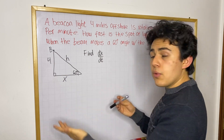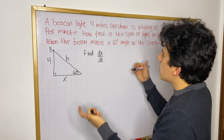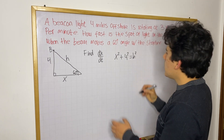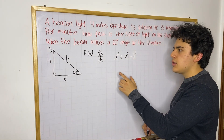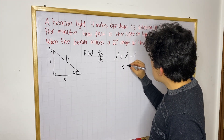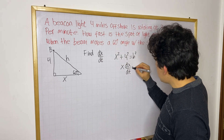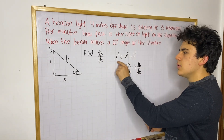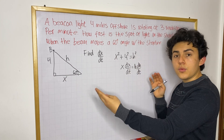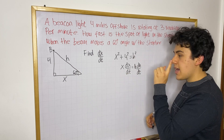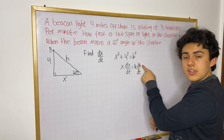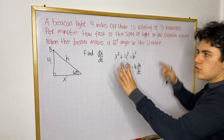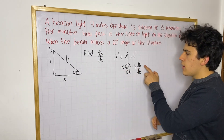So now we need to find dx/dt, because this shows us how fast this distance is moving — how fast this spot of light is moving on the shoreline. One way you might try is the Pythagorean theorem: x² + 4² = h². However, this will not work out. You would simply get x·(dx/dt) = h·(dh/dt), and the problem with this equation is that we do not know how fast the hypotenuse is changing with respect to time.